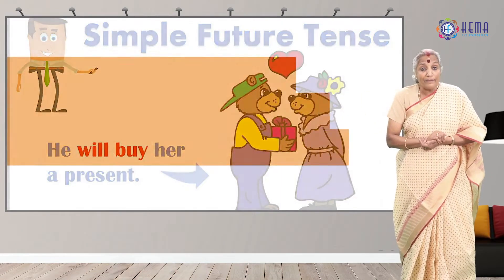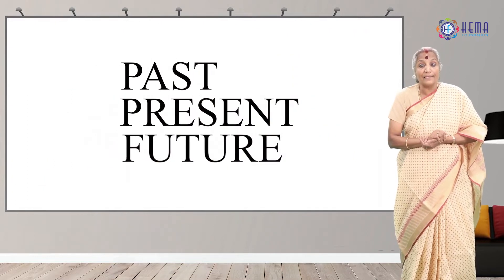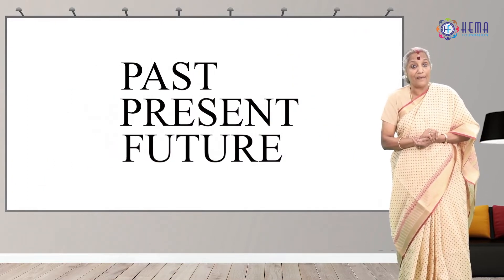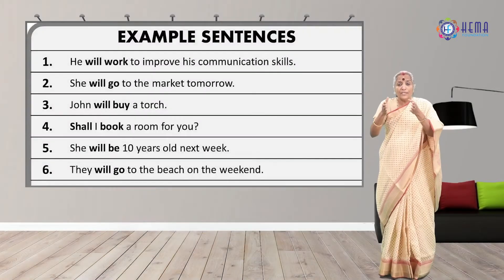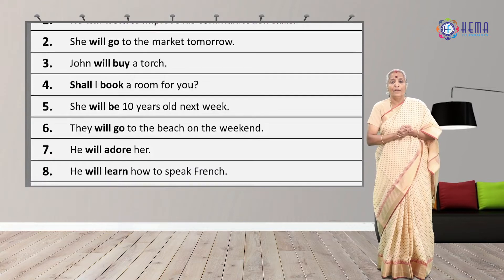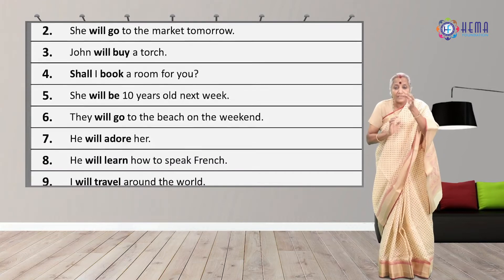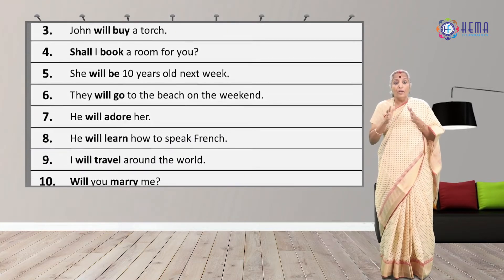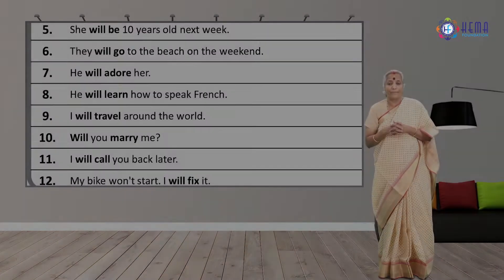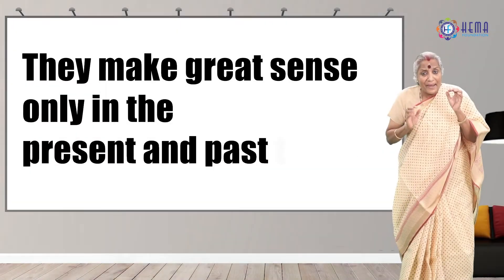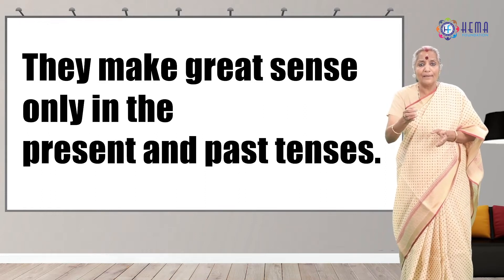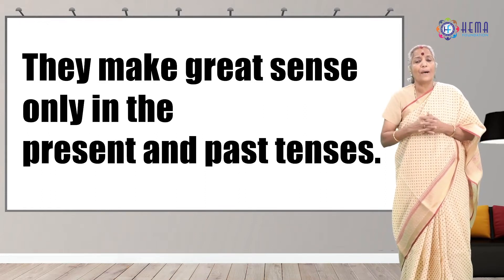There are three main verb tenses in English: present, past, and future. Towards the future, the verb needs support to be specific — alone, the verbs cannot make any sense for future. They make great sense only in the present and past tenses.